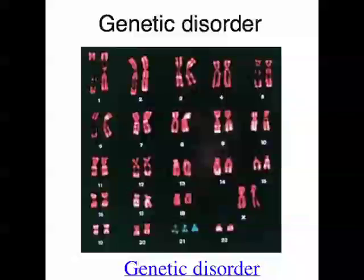Some diseases exist because of some sort of defect in an affected person's DNA. So they might have maybe a little bit too much DNA or be missing a little bit of DNA, or the instructions that the DNA code for might be muddled up or wrong in some way. These diseases are known as inherited diseases, and they're also called genetic disorders.